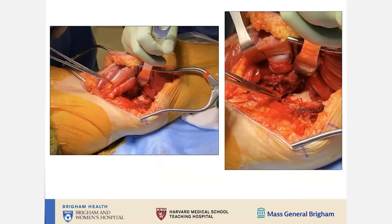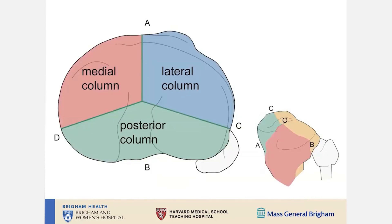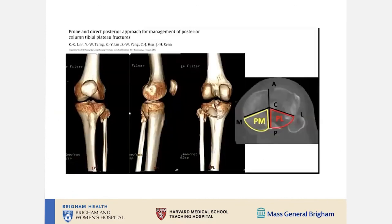Even in muscular patients, you can easily see the entire posterior portion of the proximal tibia. You can extend the incision if needed, or even make an incision in the popliteal crease and extend up the lateral side of the distal femur, though it is incredibly rare to need that. If it's an isolated posterior column with both posterior medial and posterior lateral involvement, lying the patient prone and going from a posterior approach makes it much easier for yourself.